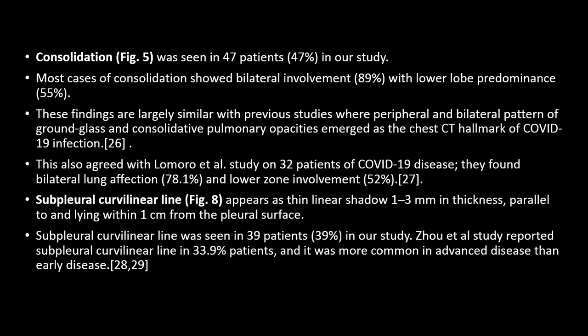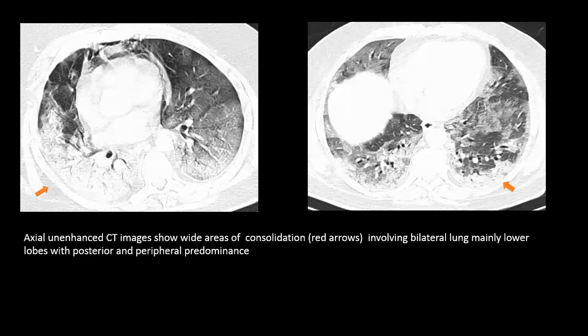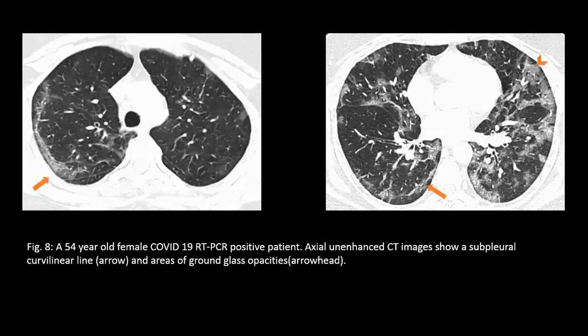Another finding is consolidation, which is mostly bilateral with lower lobe predominance, consistent with previous studies showing bilateral ground glass and consolidation patterns. Subpleural curvilinear lines appear as linear shadows 1–3 mm in thickness, parallel to and lying within 1 cm of the pleural surface. An axial enhanced CT shows consolidation by the red arrow involving bilateral mainly lower lobe and posterior peripheral areas, and another enhanced CT shows subpleural curvilinear lines and ground glass opacity as indicated by the arrowheads.